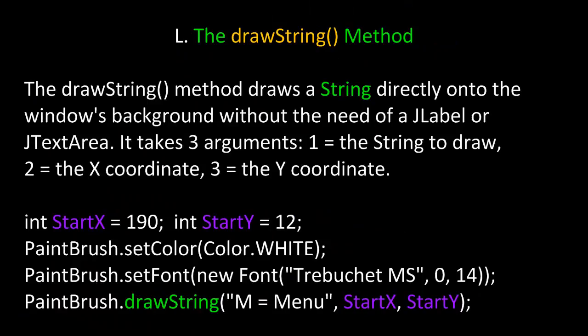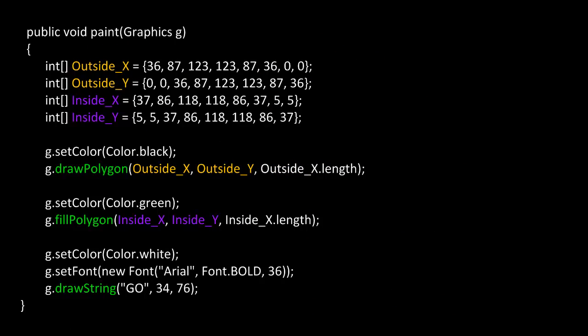Previously we called the drawString method, so here's a bit more about that. The drawString method draws a string directly onto the window's background without the need of a JLabel or JTextArea. It takes three arguments: one, the string to draw; two, the x-coordinate; and three, the y-coordinate. You can also set the font before calling drawString to change the font or point size. In this example, we set the color to white with setColor, set the font with setFont instantiating a new Font object with TrebuchetMS as the face, 0 for plain, and 14 as the point size, and then call drawString passing in the string and the starting x and y coordinates.